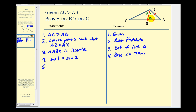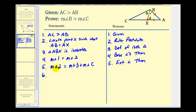And now we're going to create some equations that involve angles one, two, three, B, and C. The first equation is going to involve angle two as an exterior angle of triangle BCX. So if angle two is an exterior angle, the measure of angle two would be equal to the sum of the two non-adjacent angles — the measure of angle three plus the measure of angle C. The reason for this is the exterior angle theorem. Now using statements four and five, we can perform substitution for the measure of angle two: the measure of angle one equals the measure of angle three plus the measure of angle C. This is by the substitution property.